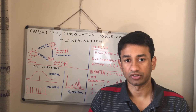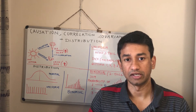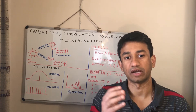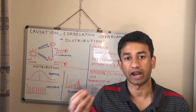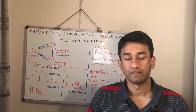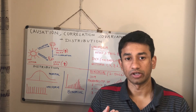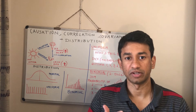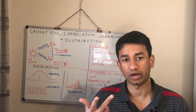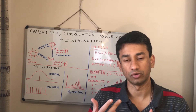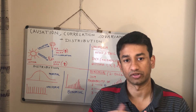So when we say causation, it means that something is causing an activity to happen. When we say correlation, it simply means that two attributes or two variables look similar to each other.